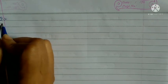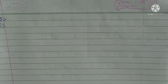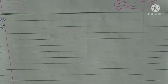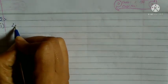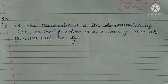According to the question, since a fraction is being discussed, first we will consider — let the numerator and denominator of the required fraction be x and y respectively. Then the fraction will be x upon y.